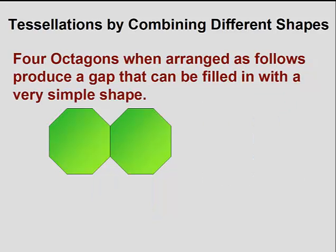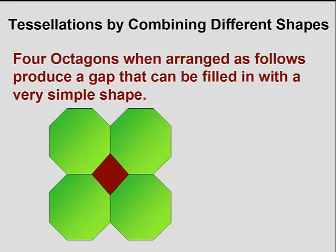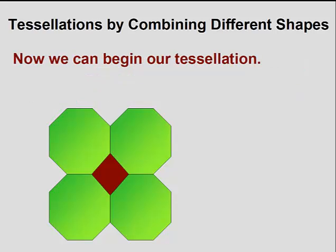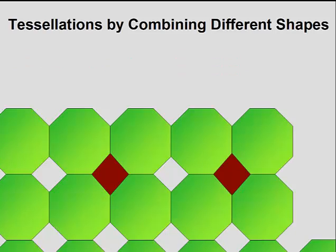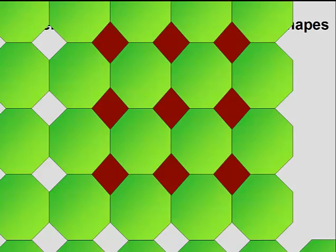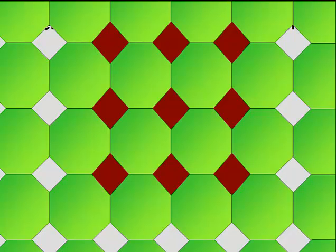However, if we arrange octagons in the following way, we will have a gap, but that gap can be filled in with another very simple shape — the square. We can carry on with our tessellation using as many octagons as we would like and filling in the gaps with squares.